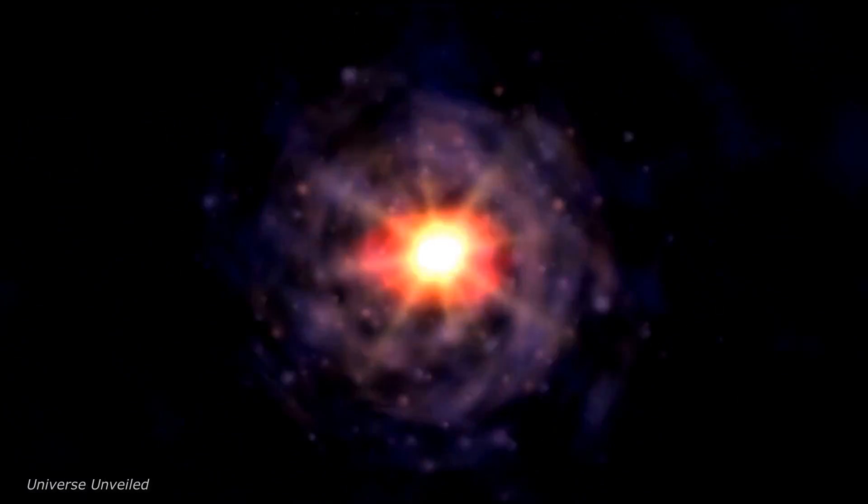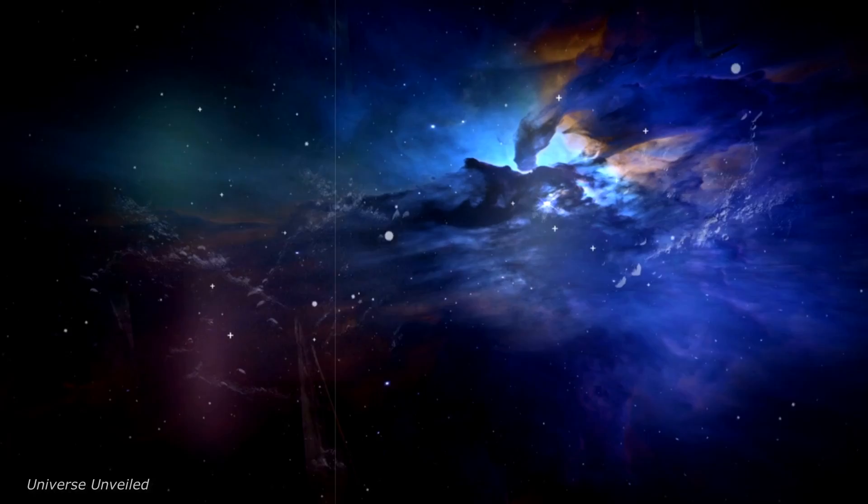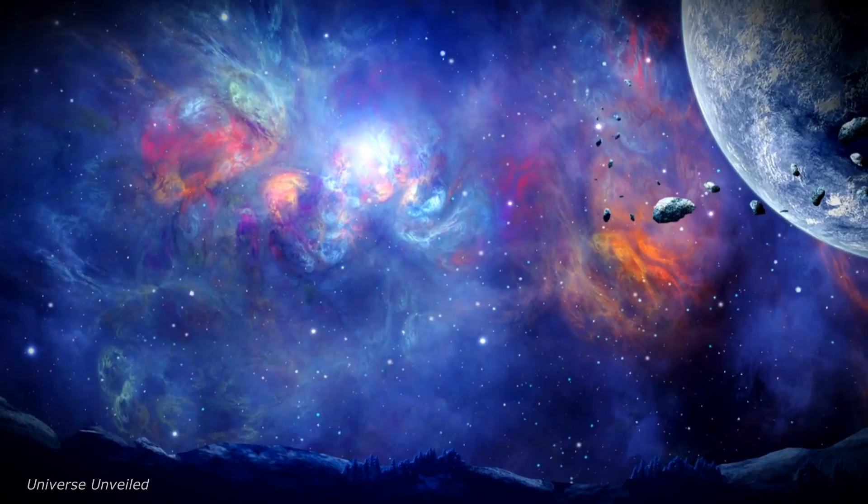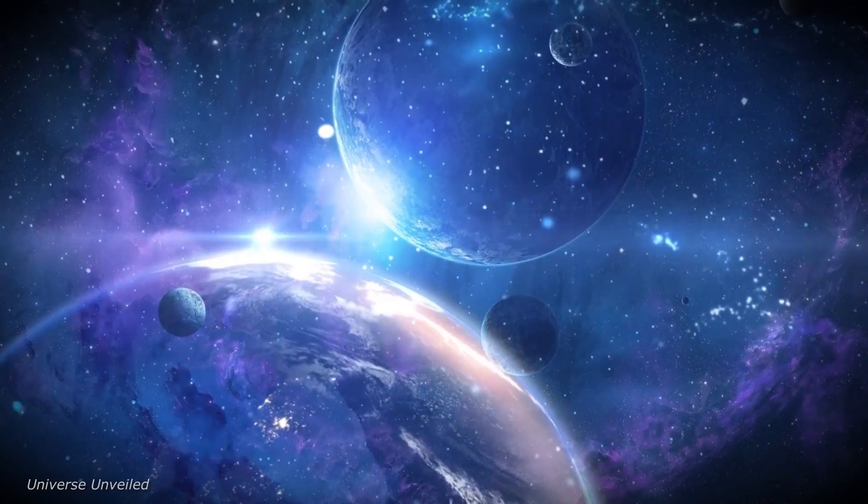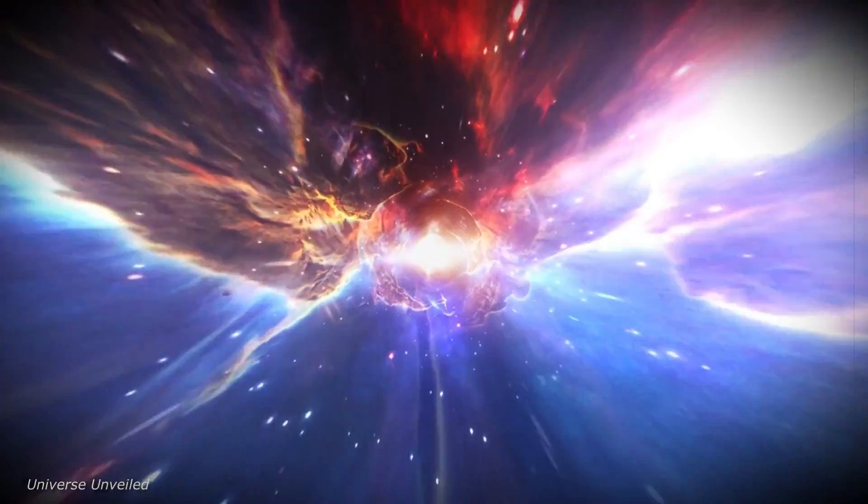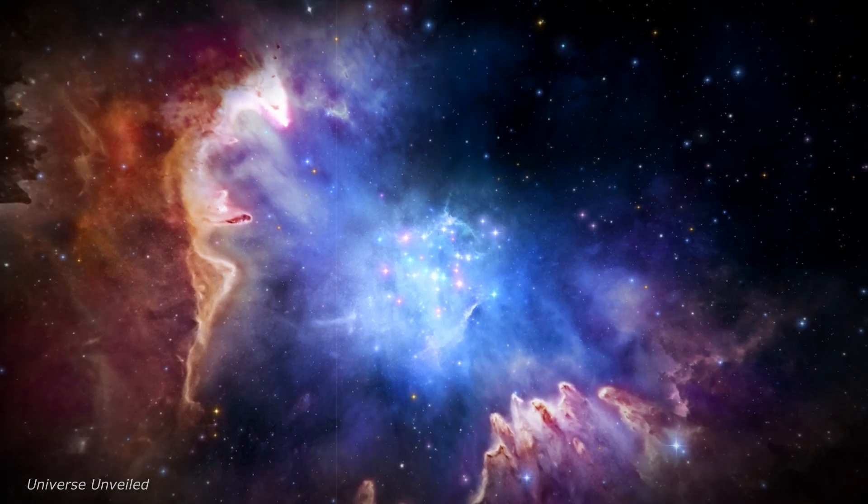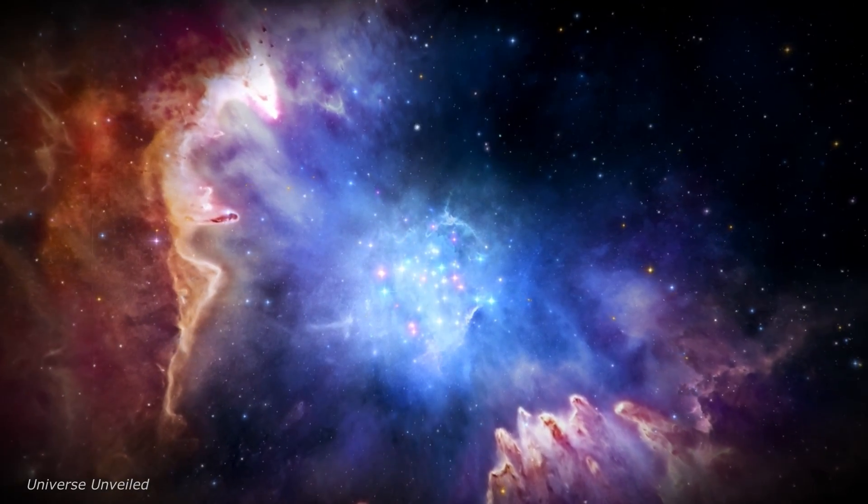JWST is helping us understand the solar wind like never before. By observing the sun's corona, where the solar wind originates, we can track the wind's formation and evolution. We can see how the sun's magnetic field shapes the wind and how it interacts with the planets and other objects in the solar system.